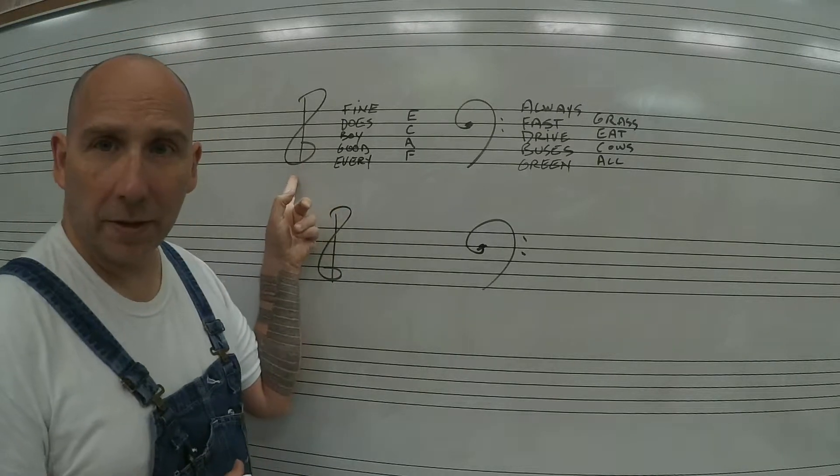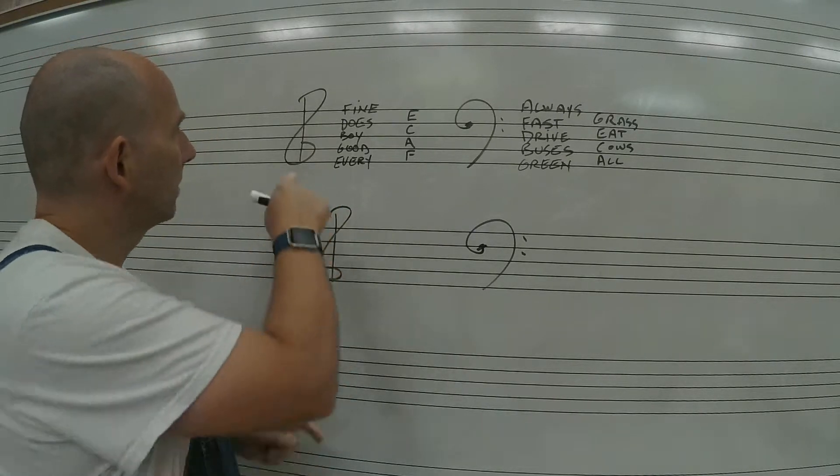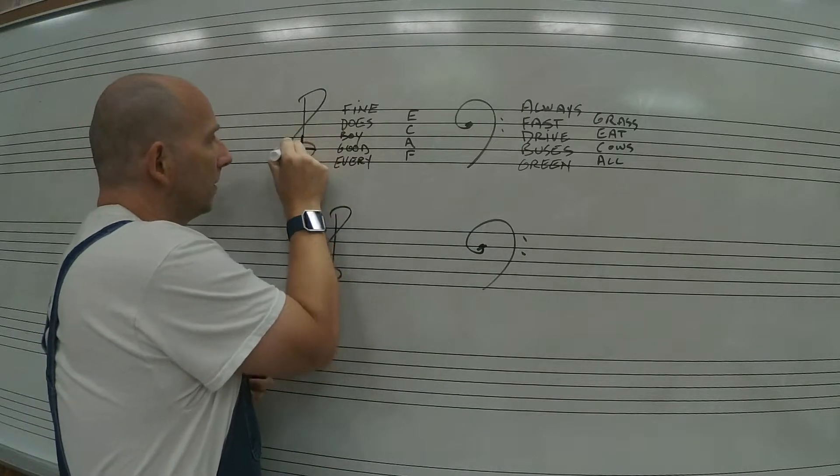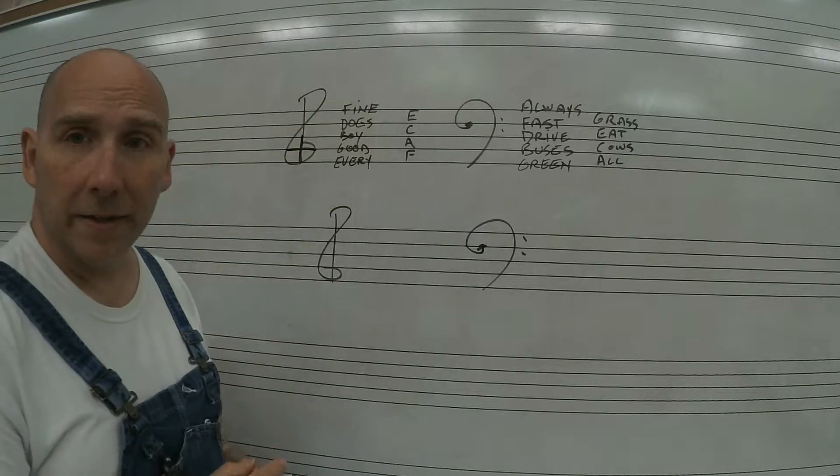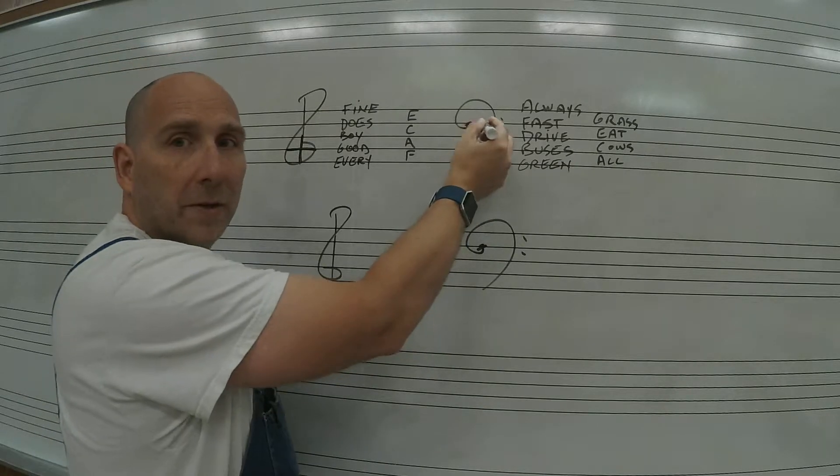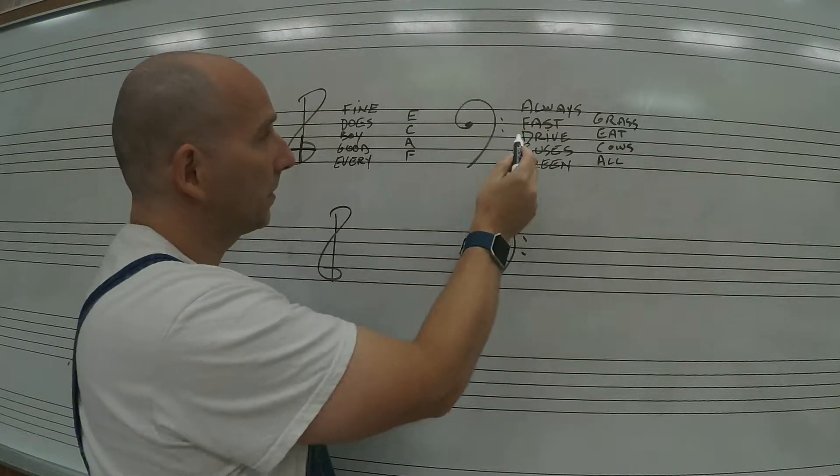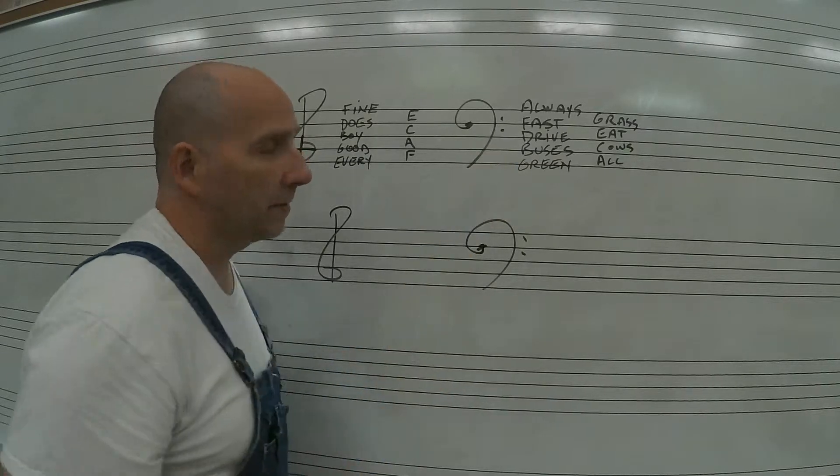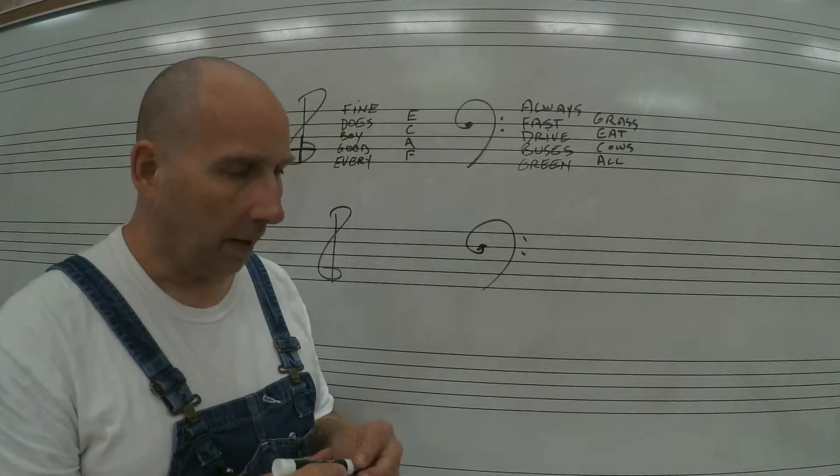The treble clef is sometimes called the G clef because this little target thing right here is marking where the G line is. This is sometimes called an F clef. The bass clef is sometimes called an F clef because these two dots surround the F.